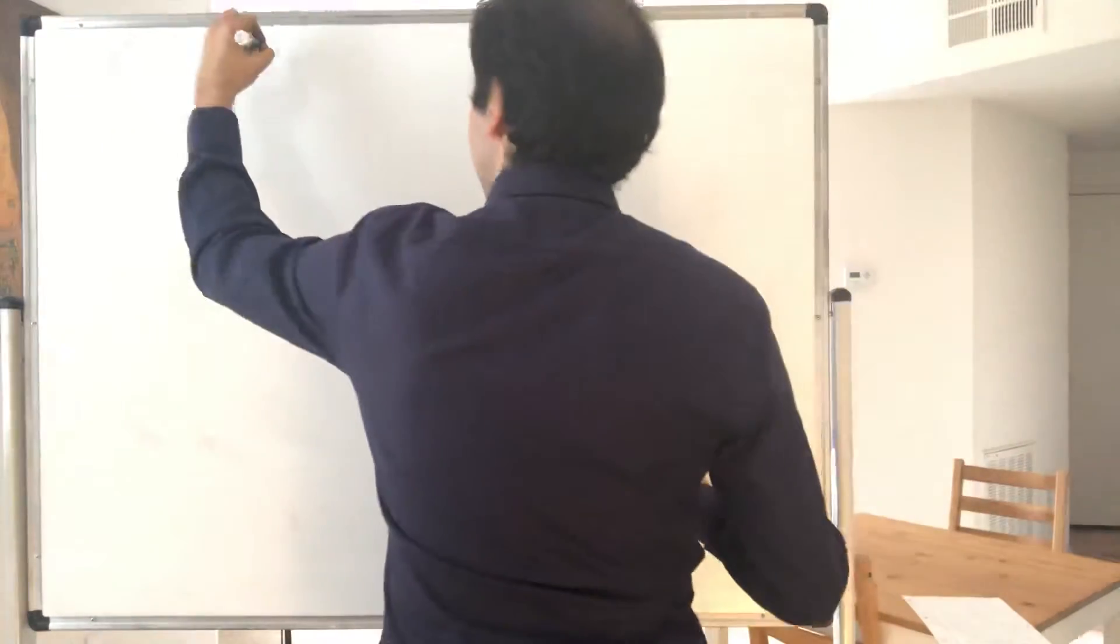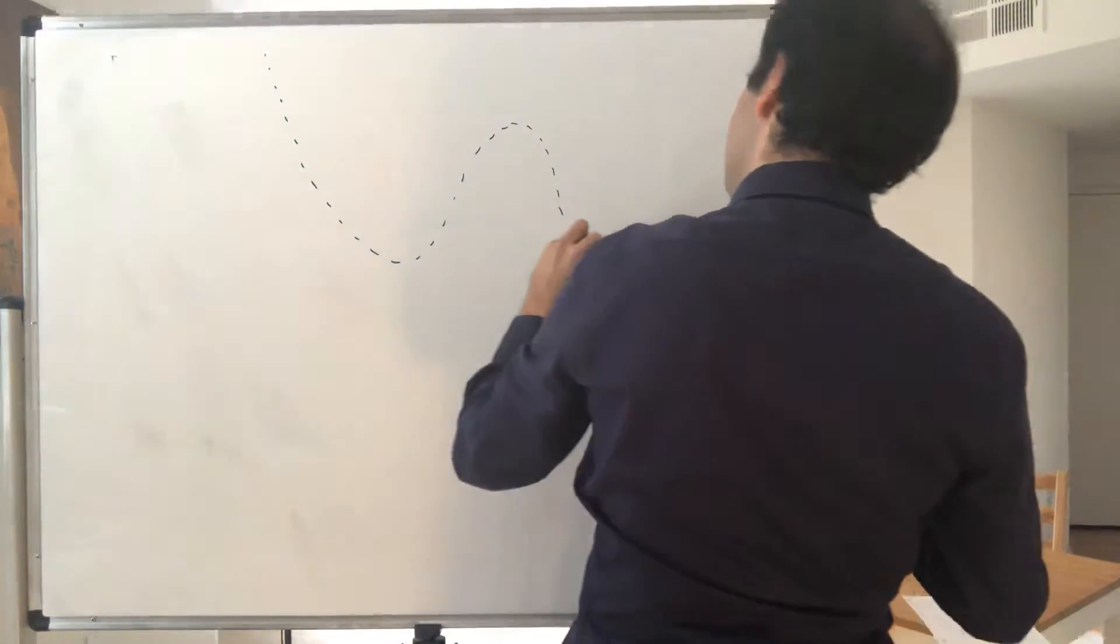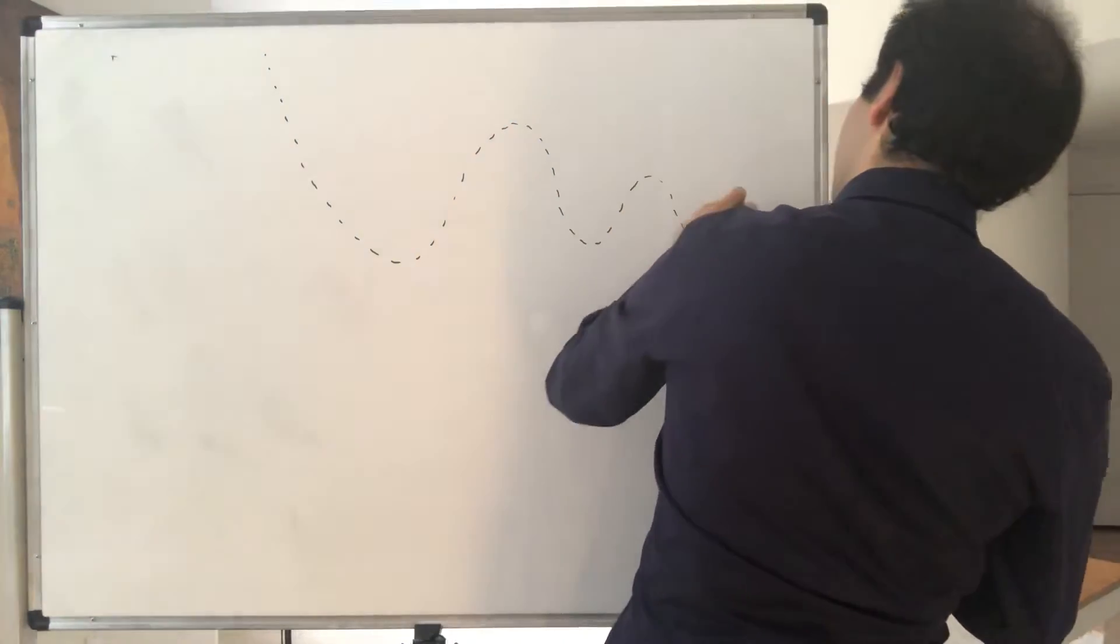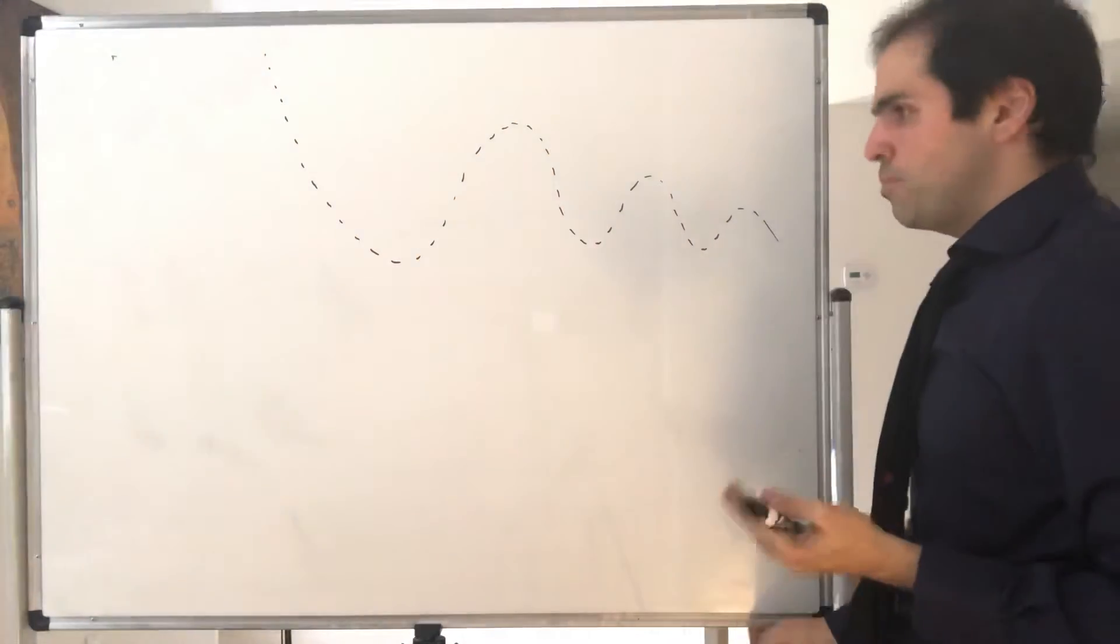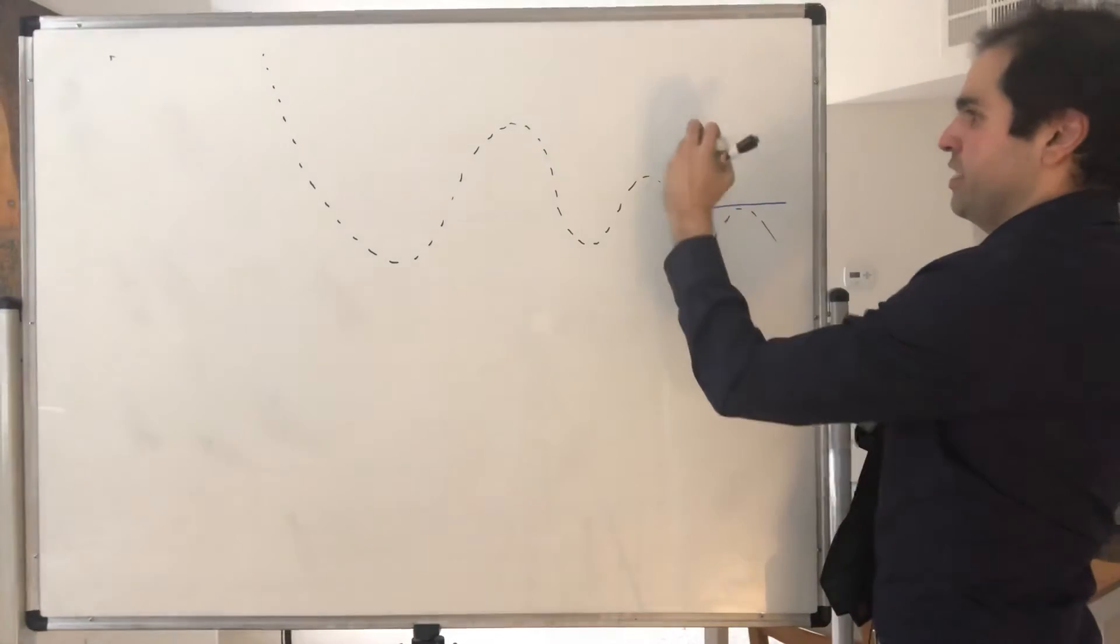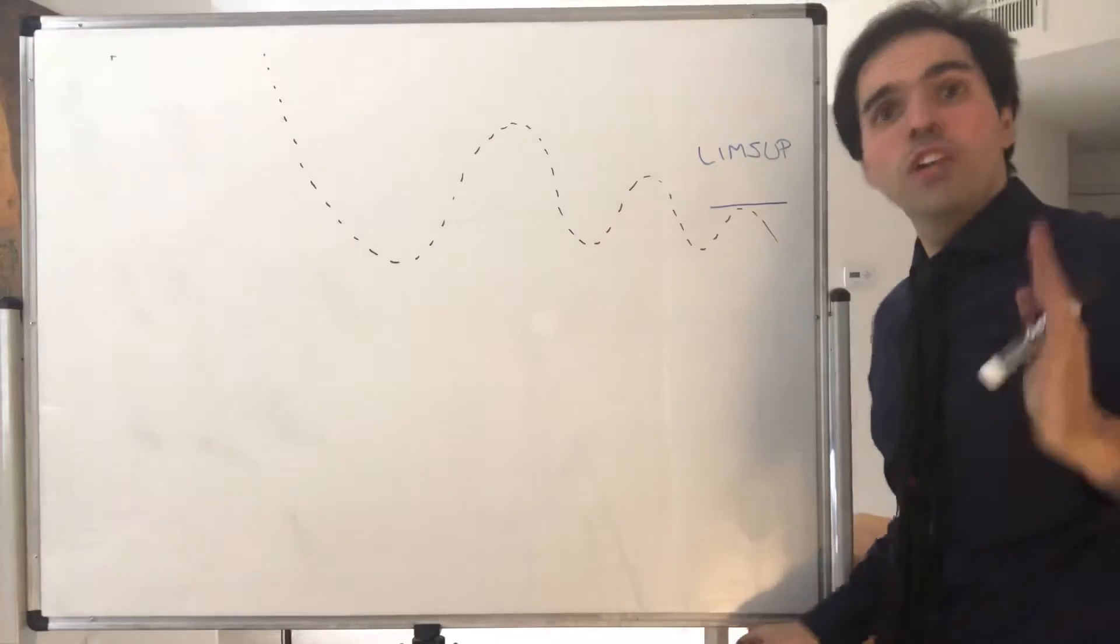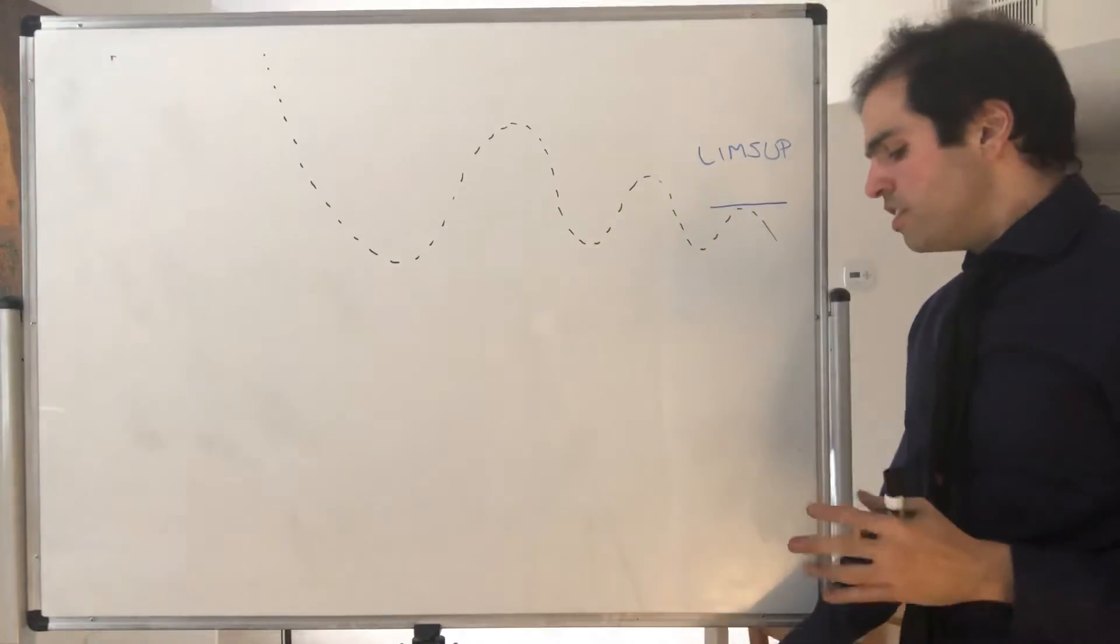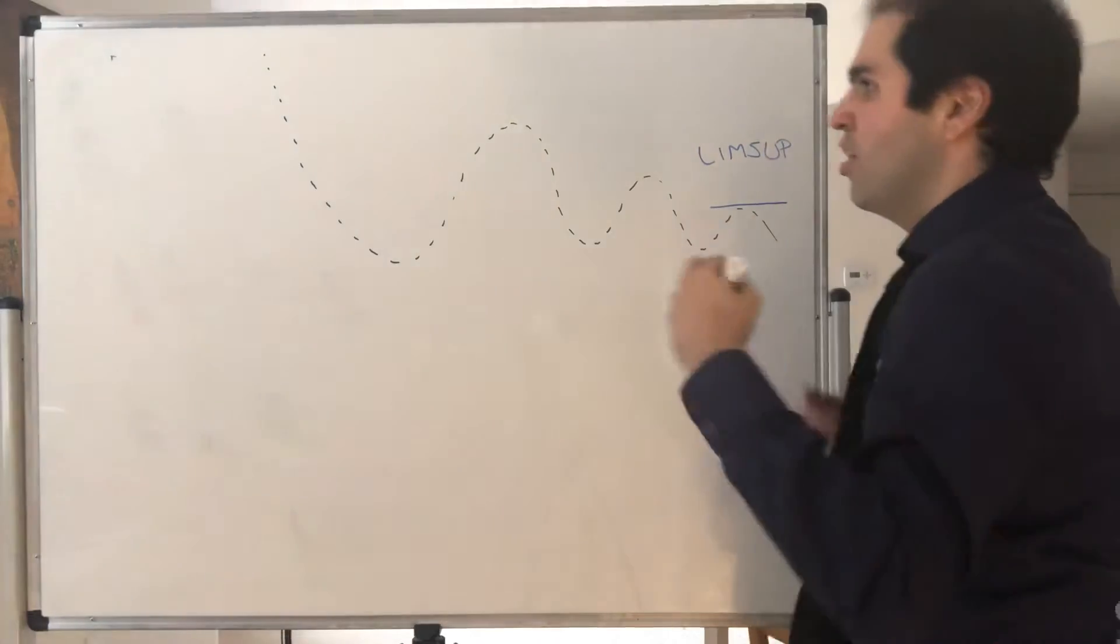Suppose you have a sequence like that. Then we would like to define the biggest possible limit, which in some sense should be somewhere around here. Well, how do you do this? You do it with thresholds. So intuitively, the limsup is the supremum but after a long time.